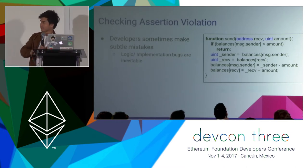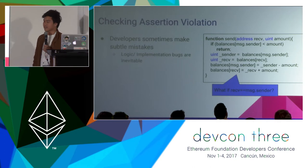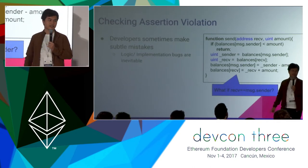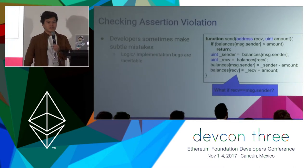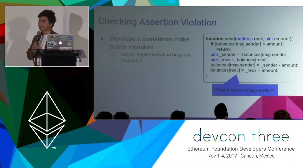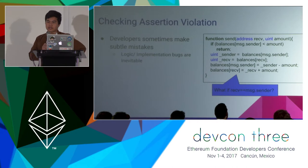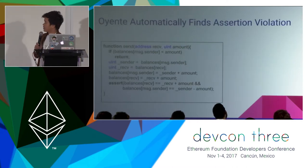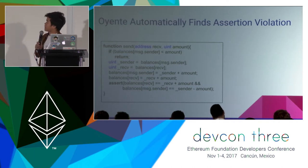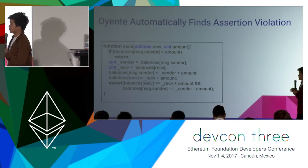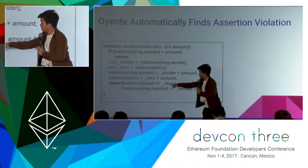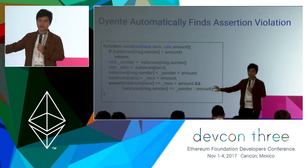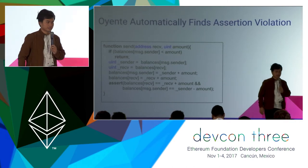What happens if sender and receiver are the same? This guy can just print more tokens out of thin air. This is really subtle and it happens in one of the contracts that we have audited before. With Oriente, if we add some assertion there, Oriente can check whether this assertion is violated before you even deploy the contract on the mainnet or testnet.